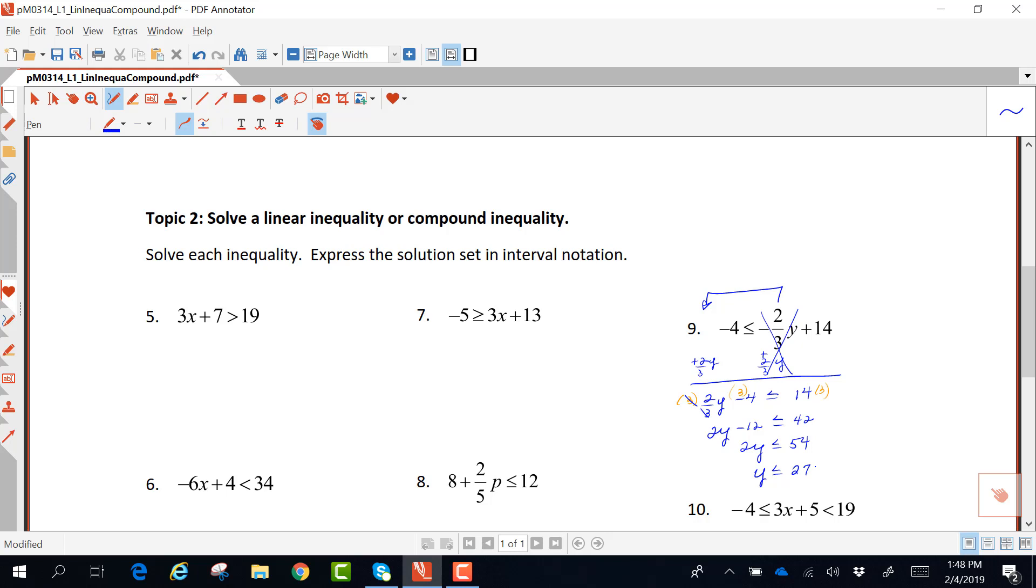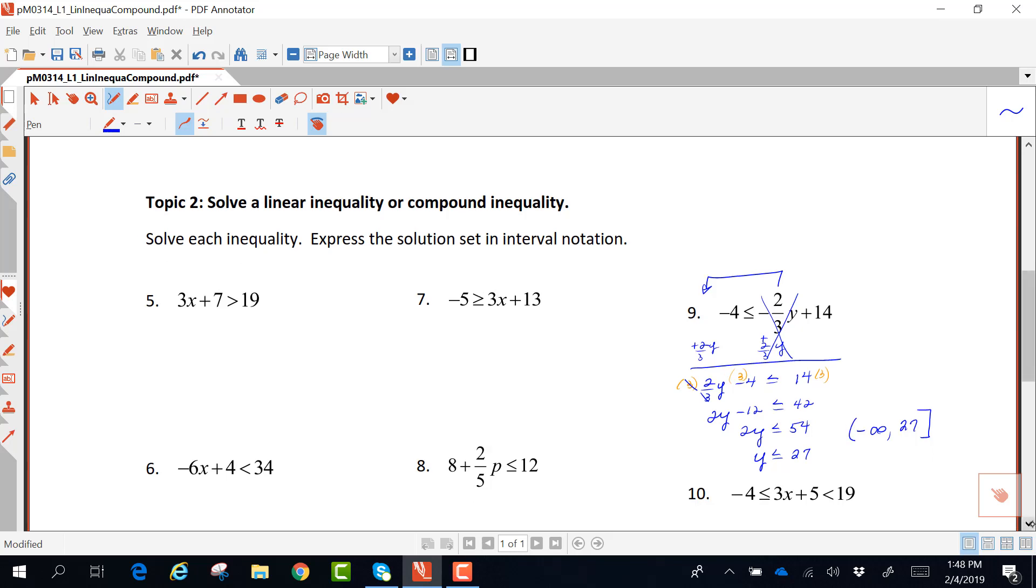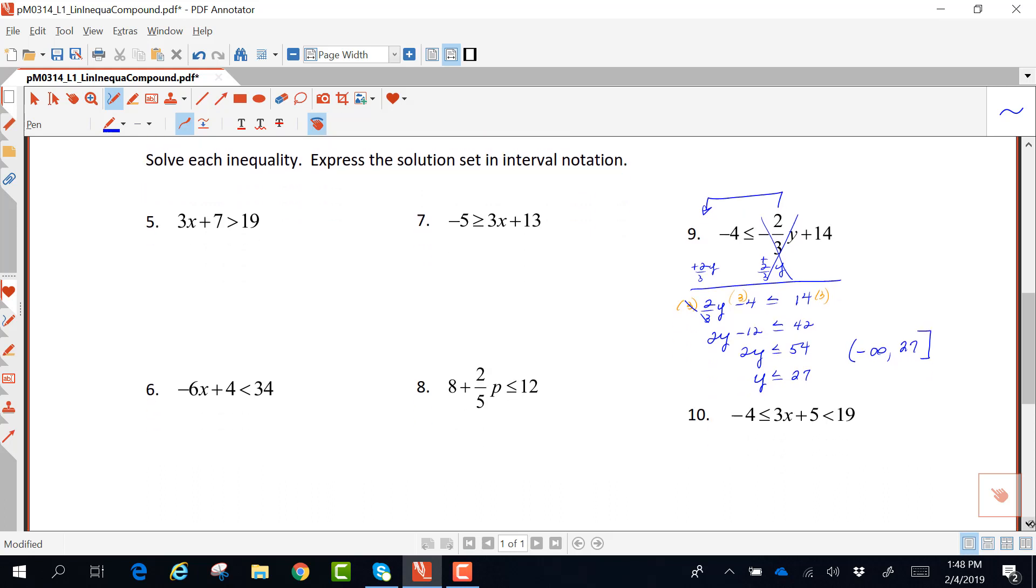Now to represent these numerous solutions, I can use a number line graph, or I can go straight to interval notation. Less than, remember, is to the left of 27. So far to the left of 27 would be negative infinity, and the right side would be 27 on the graph. The 27 is included in the solution set, so I use a square bracket. And in interval notation, a parenthesis is always placed on infinity, whether it's positive or negative.